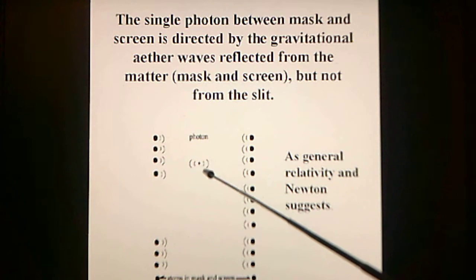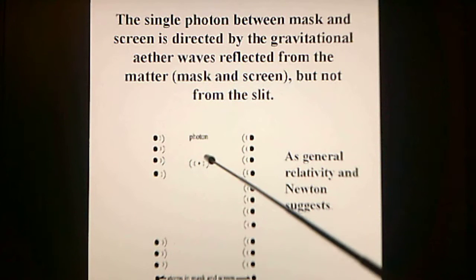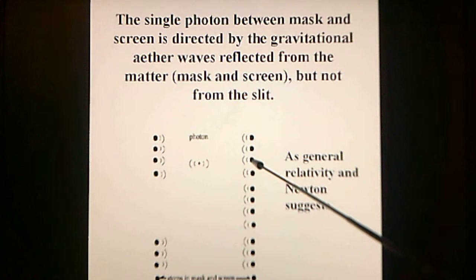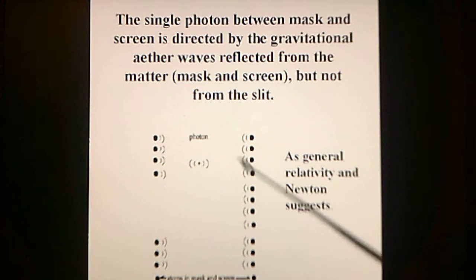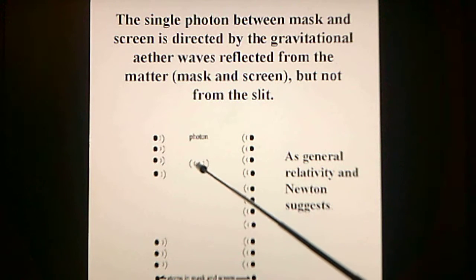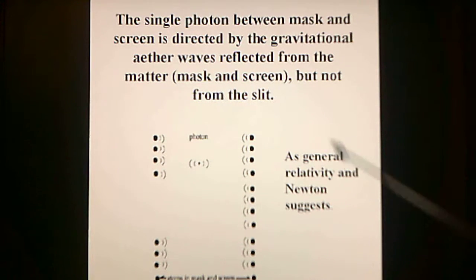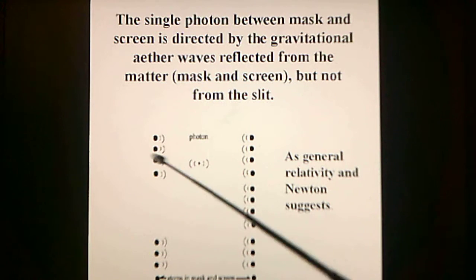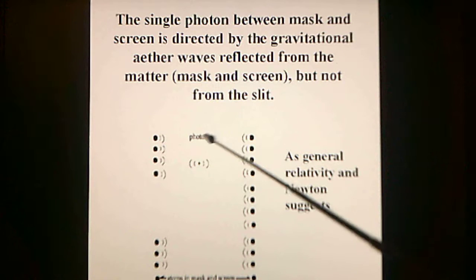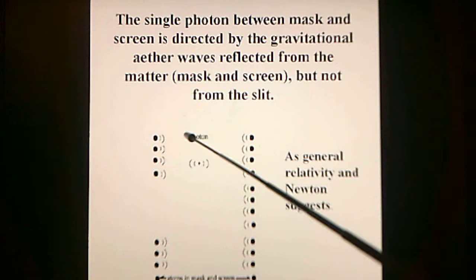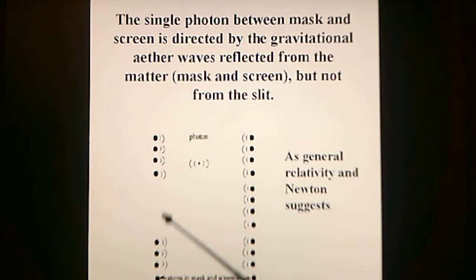Here we have a single photon between mask and screen. It is emitting gravitational waves, and these waves are being reflected by each atom in the screen and in the mask. That then forms a gradient at the photon, and that gradient directs the photon. The slit has no waves going back, and therefore the gradient here is changed and directs the photon, accounting for the dimensions of the slit.